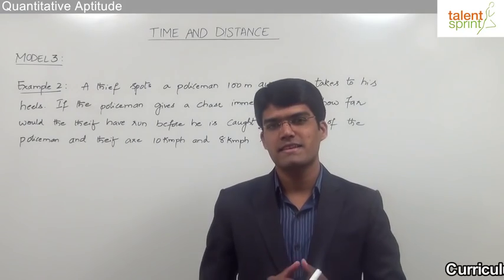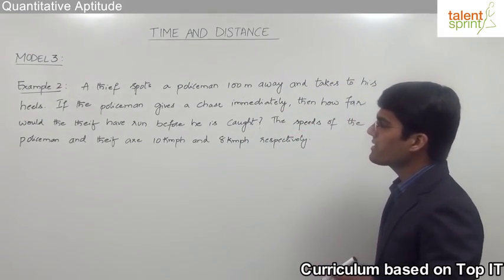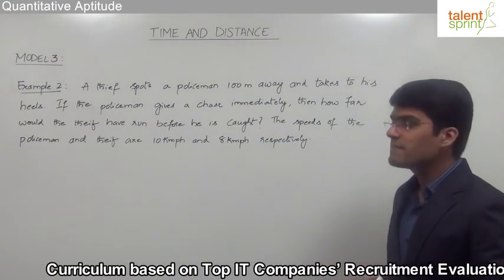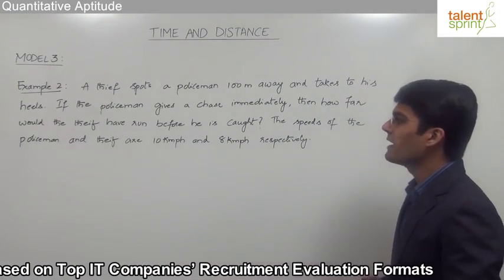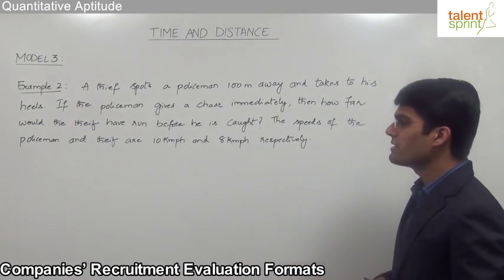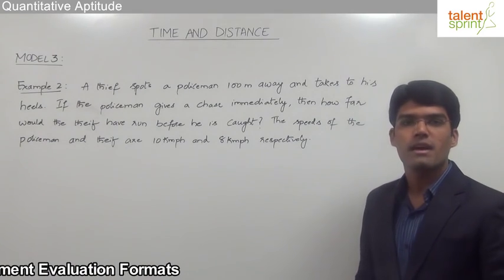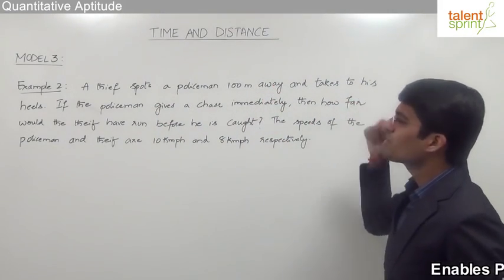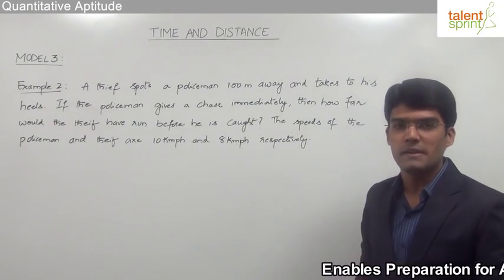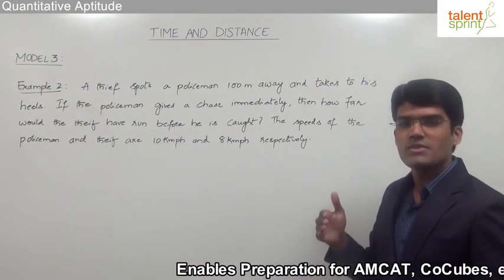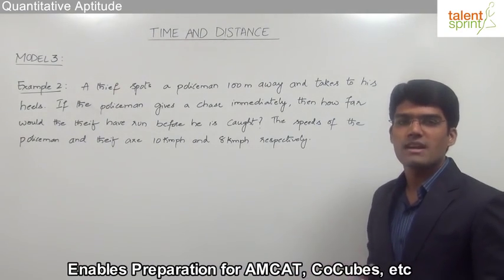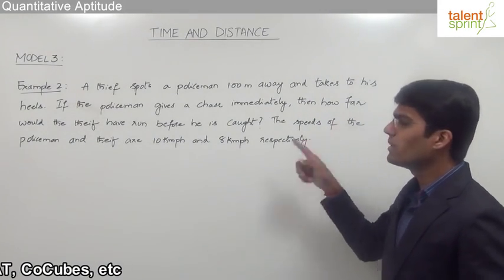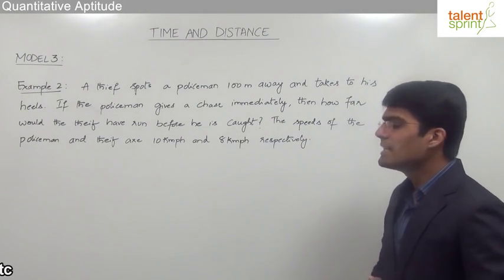Let us now take another interesting example from model 3. A thief spots a policeman 100 meters away and takes to his heels. If the policeman gives chase immediately, how far would the thief have run before he is caught? The speeds of the policeman and the thief are 10 km per hour and 8 km per hour respectively.